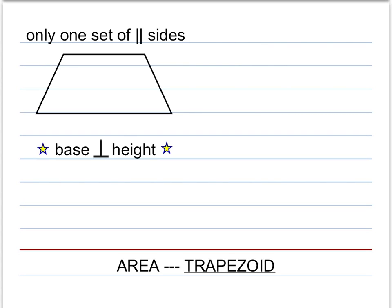When finding the area of a trapezoid, remember that a trapezoid has only one pair of parallel sides, which we call the two bases. We'll call this base 1 and this base 2. The height of a trapezoid is always perpendicular to the two bases, so the distance between the two bases and perpendicular to both bases is the height.